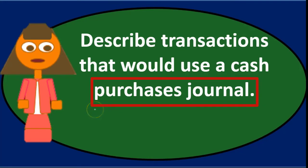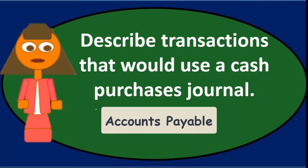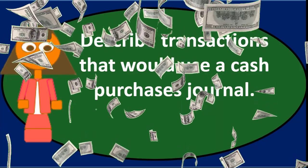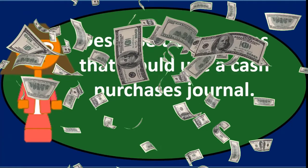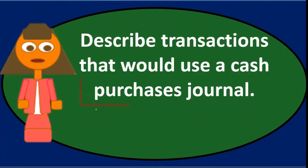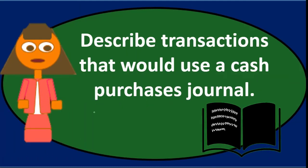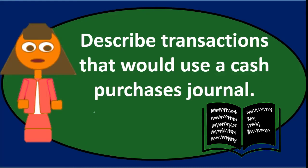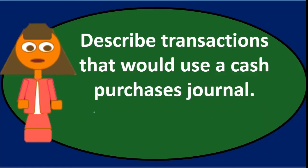The key points on the purchases journal: it is a special journal used for purchases, but only purchases on account — it is really an accounts payable journal. If purchases are made for cash, they would not go in the purchases journal; they would go into the cash receipts journal. The purpose of the purchases journal is to simplify transactions and reduce data input throughout the month by recording in a simplified way, summing everything up, and recording just one journal entry into the general journal at the end of the period.